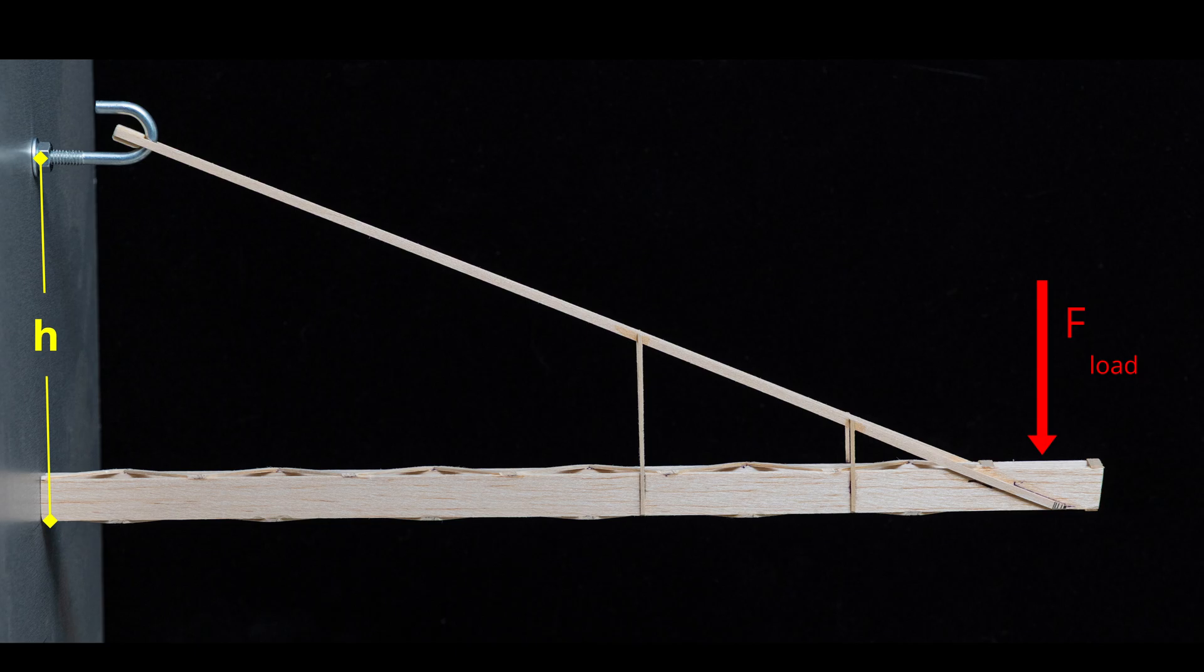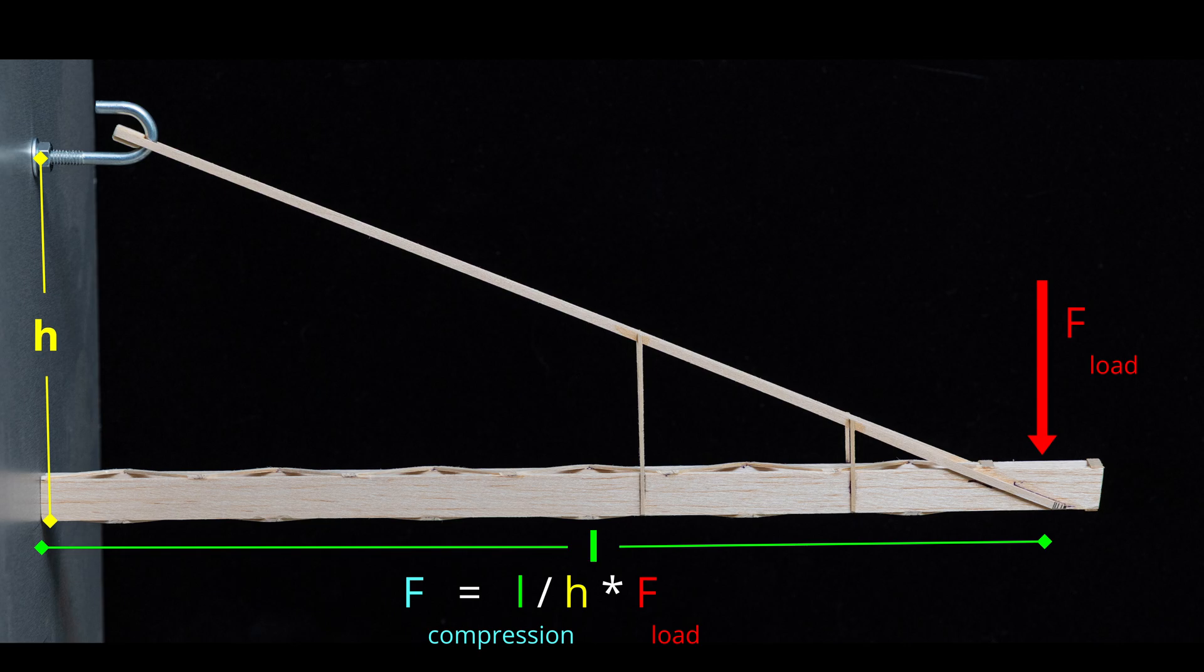If we assume the height of the boomie is h and the length is l, the compression force is l divided by h times the vertical downward force. The tension force is the square root of h squared plus l squared divided by h times the vertical downward force.